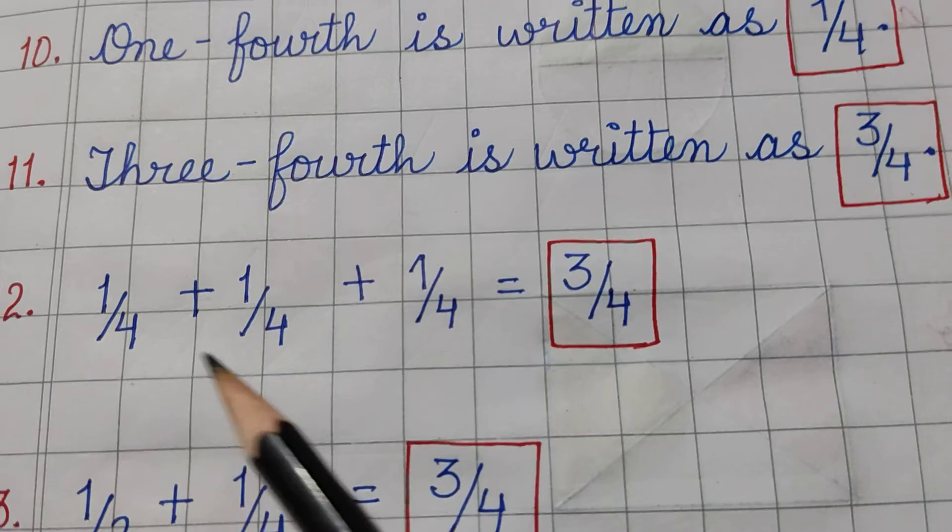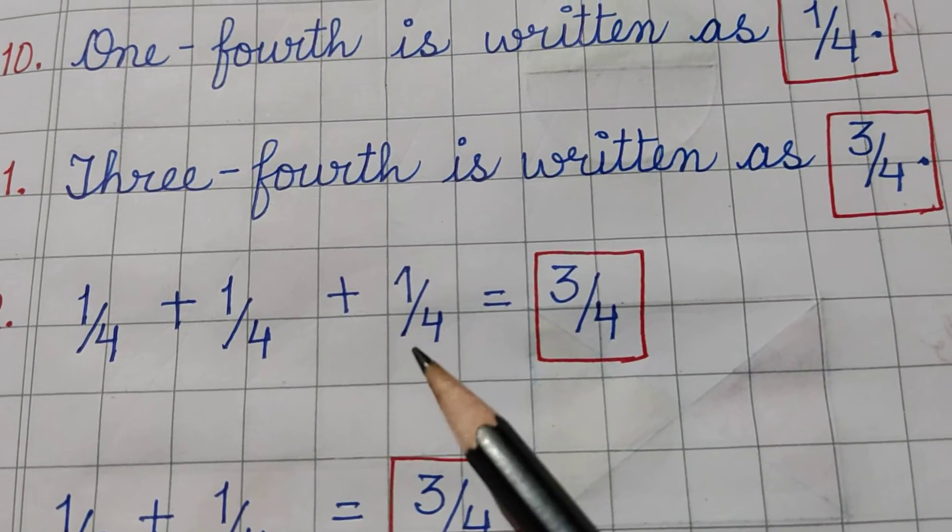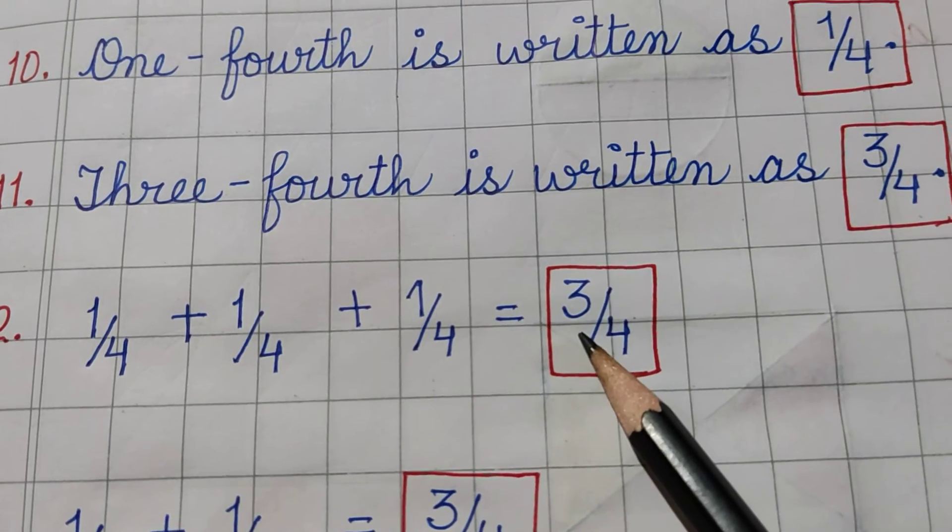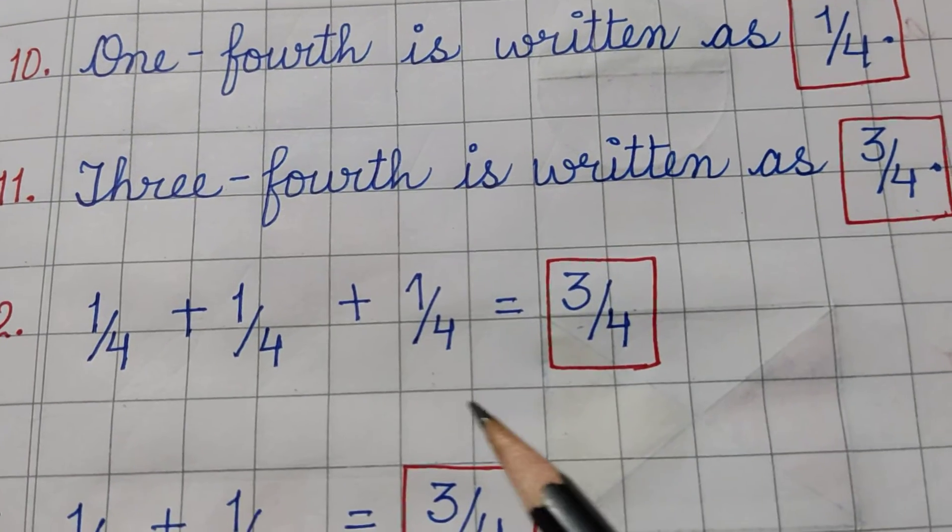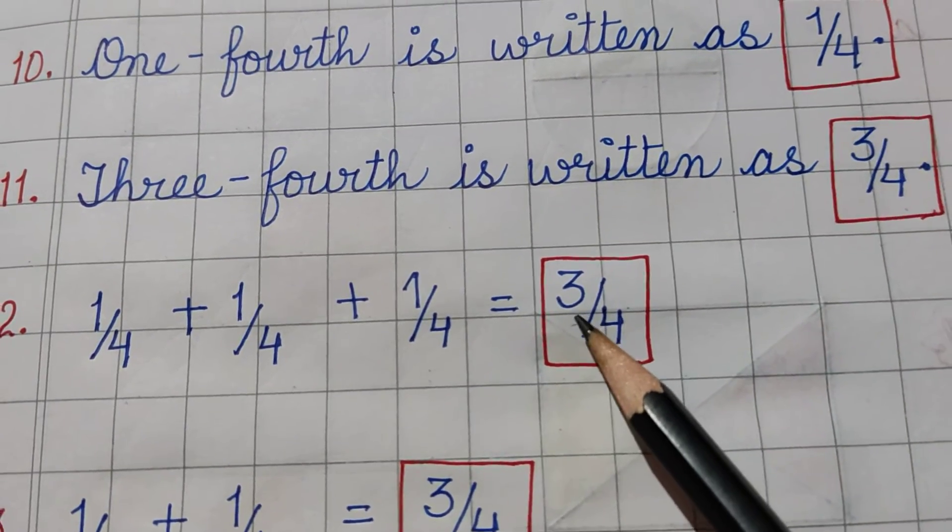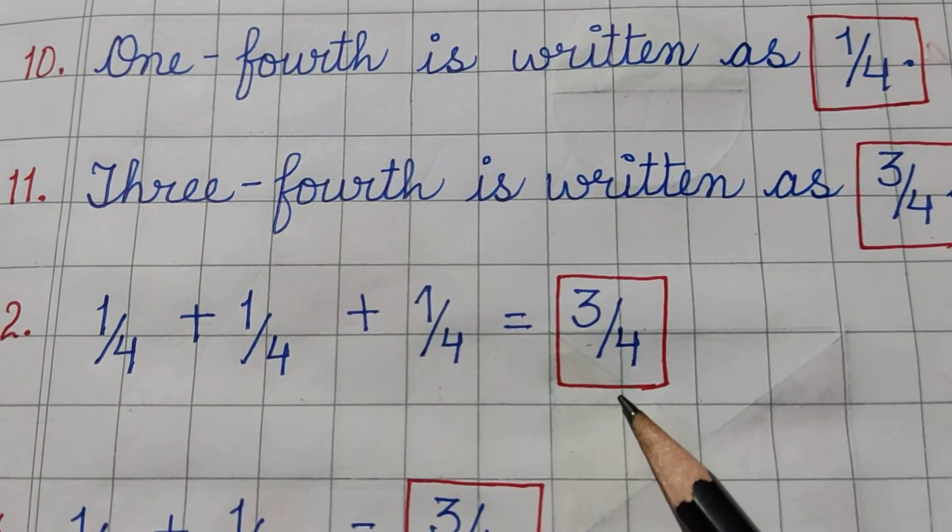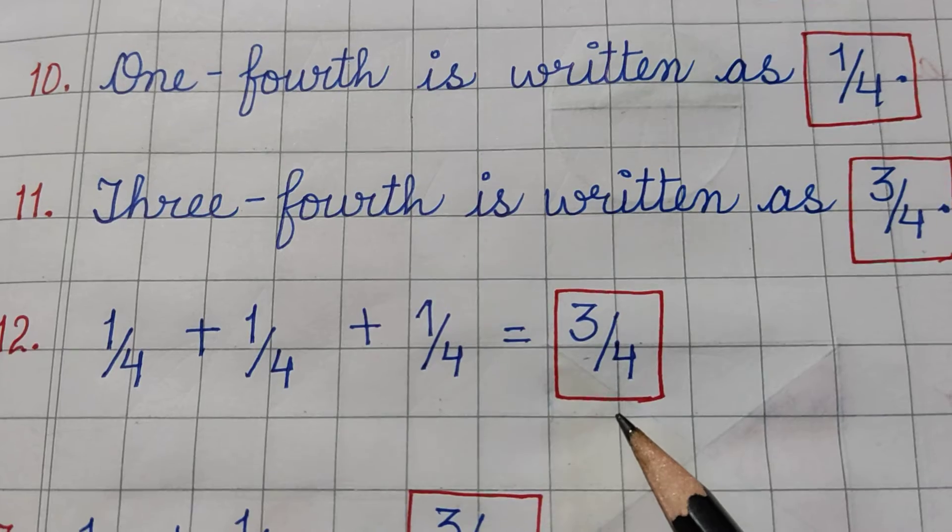Now the 12th one is 1 upon 4 plus 1 upon 4 plus 1 upon 4, that's 3 one upon 4. That means it is 3 upon 4, 3 quarters. 3 upon 4 is called 3 quarters.